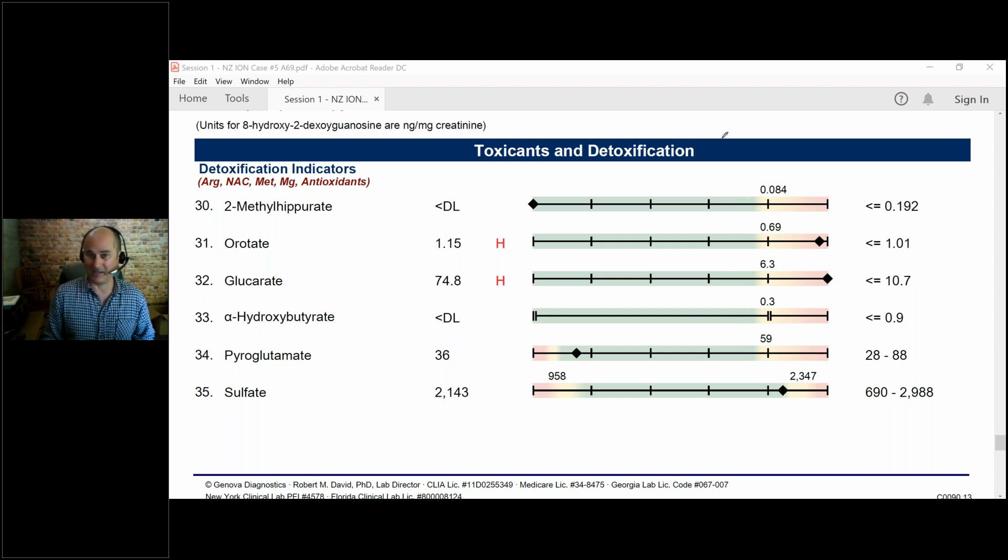It's just a problem that we're all facing now. We've got to deal with it. So in order to protect ourselves, we have detoxification pathways, and this lab test measures six of them. Methylhippurate is directly related to chemical exposure.